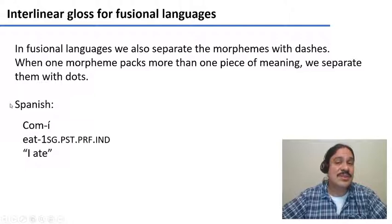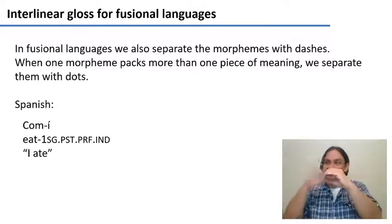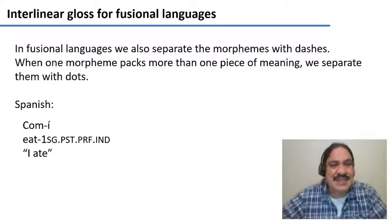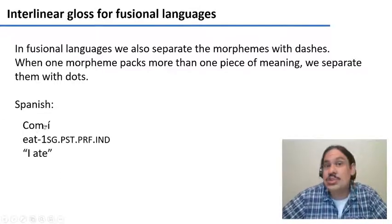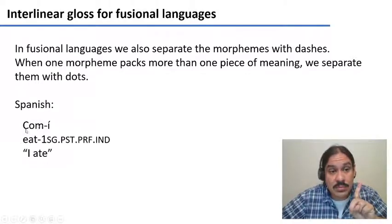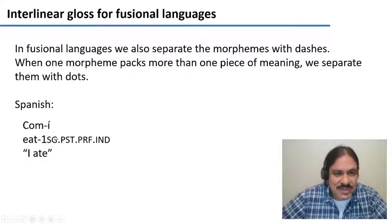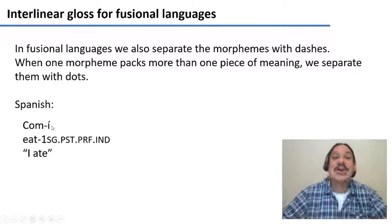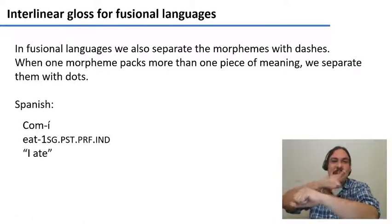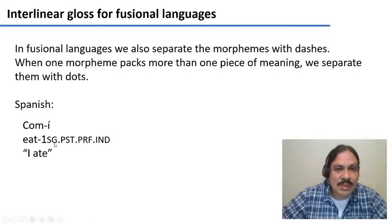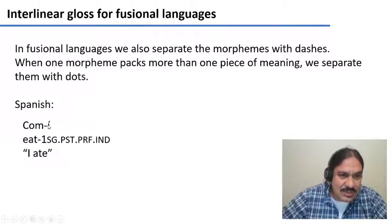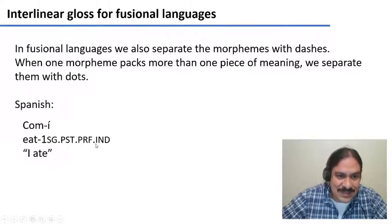However, fusional languages have another challenge. In fusional languages, one morpheme can pack many different units of meaning in it. For example, in Spanish, the word 'comí' has two morphemes: the root 'com', which means eat, and the suffix 'í', which is the first person singular, the past tense, the perfect aspect, and the indicative mood — all packed into that one morpheme. So because one morpheme can have more than one meaning unit, we separate those meaning units with a dot.